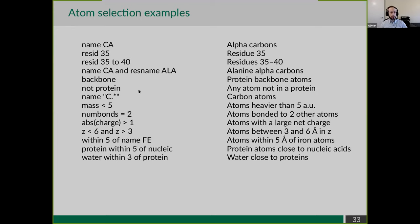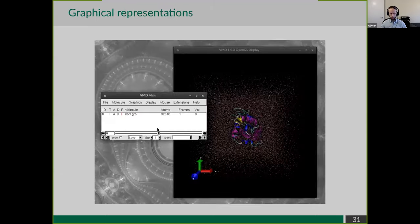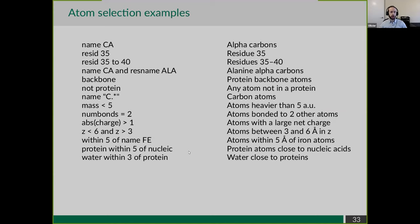You can also select according to advanced comparisons - for instance, 'z >= 6 or z <= -3', which is practical when simulating a protein in a membrane to select atoms in a slab along the Z axis. You can also select atoms close to other atoms: 'within 5 of name Fe' will show all atoms within 5 Angstroms of your iron atom in a metalloprotein.